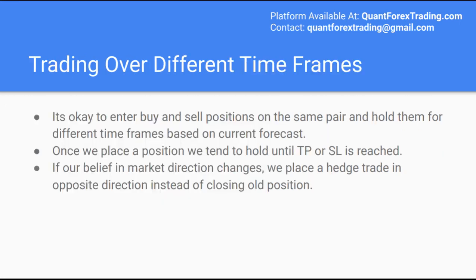One thing to note regarding buying and selling a currency pair: it is generally okay to both buy and sell a position with this strategy. If you are based in the US, you can open two sub-accounts, one for buy positions and one for sell positions. Placing a trade in the opposite direction is generally known as a hedging strategy, and allows us to change our mind in terms of the fundamental direction we think the market is moving in. Once we place a trade, we tend to leave it open until the stop loss or take profit are reached. If we change our mind on direction, we simply place a trade in the opposite direction using the same approach.